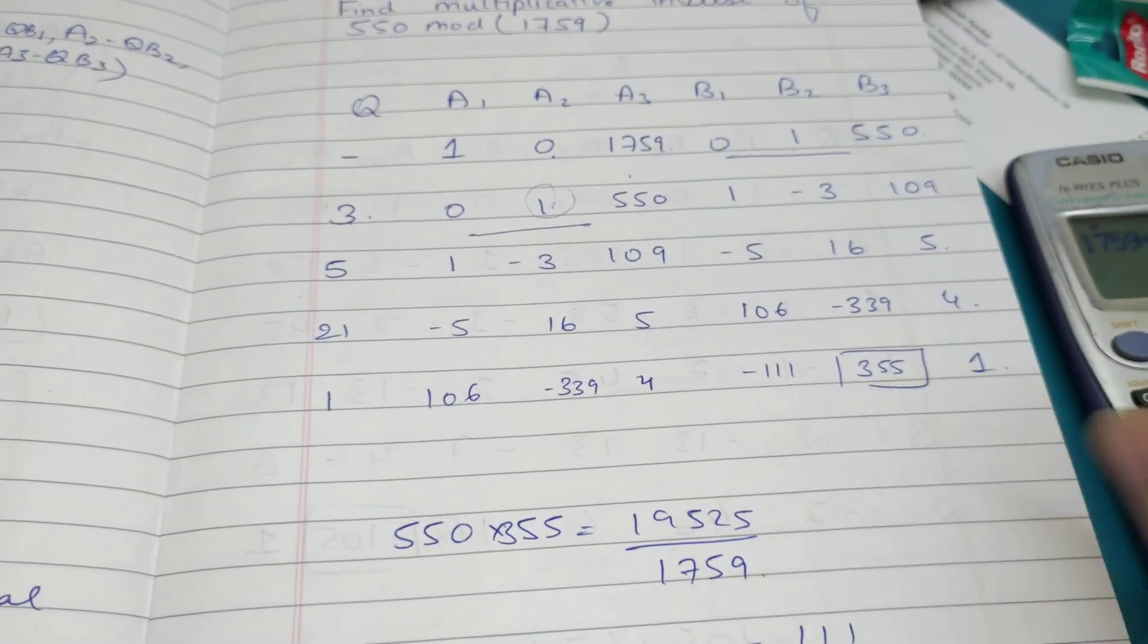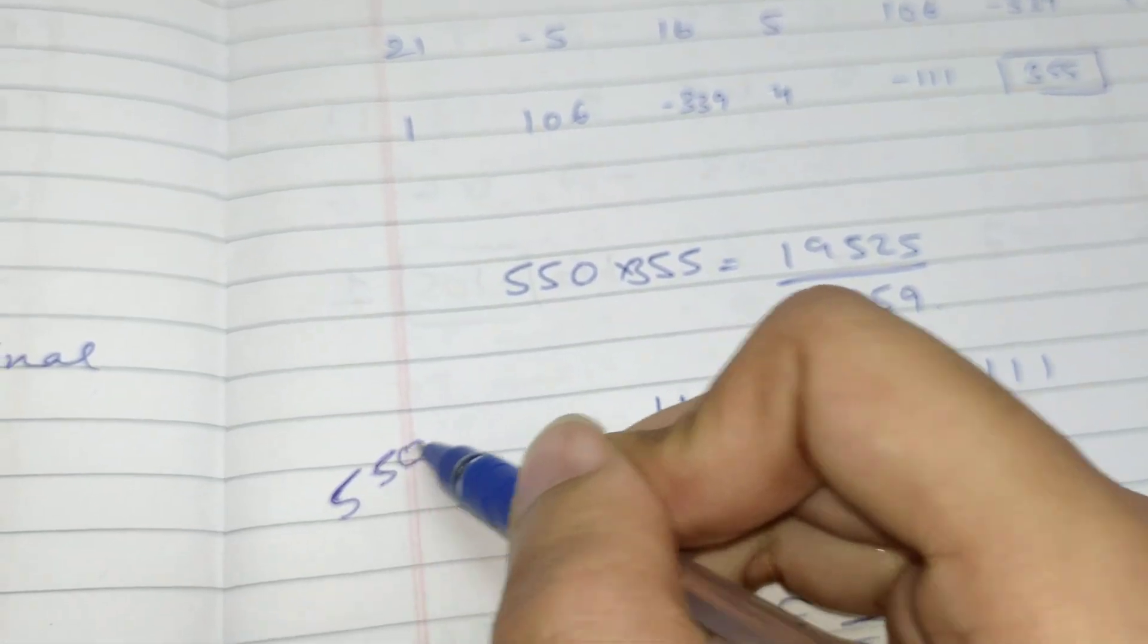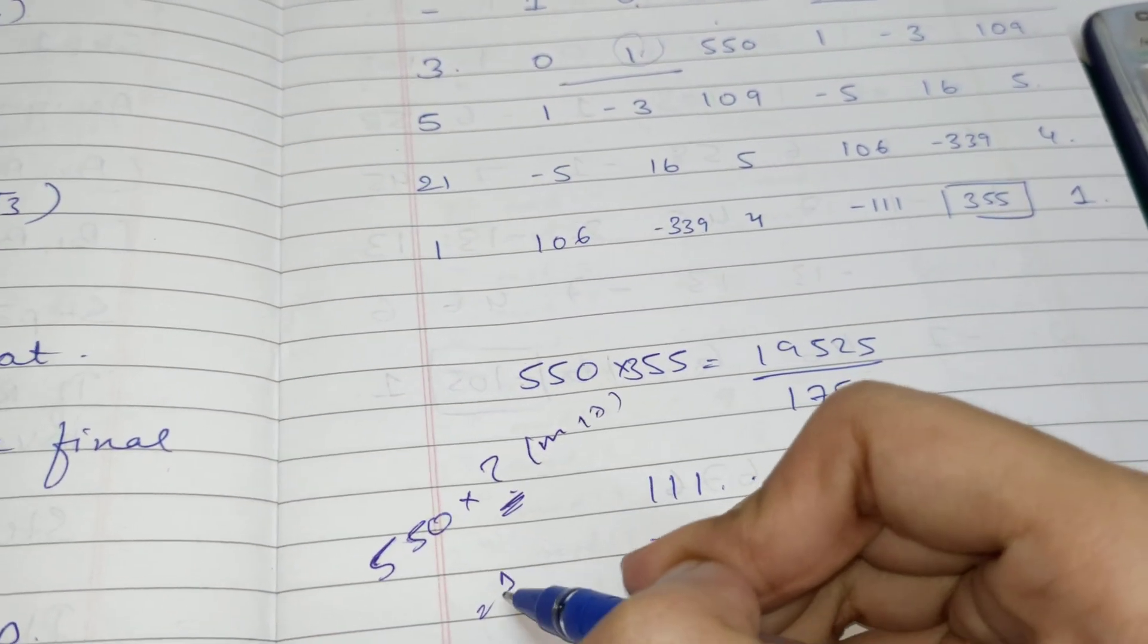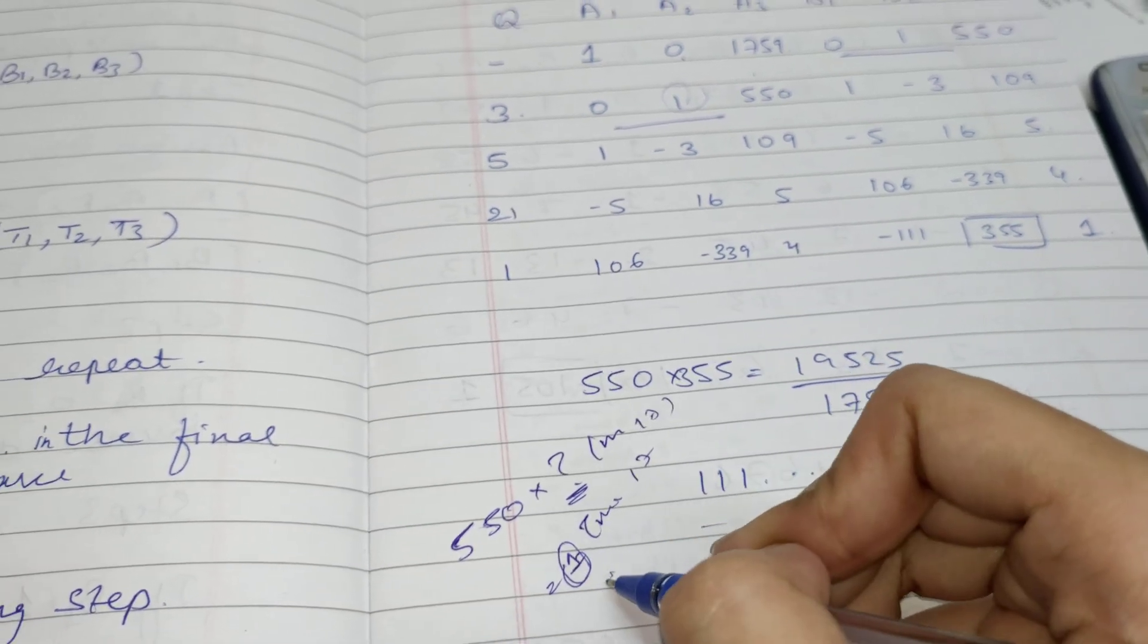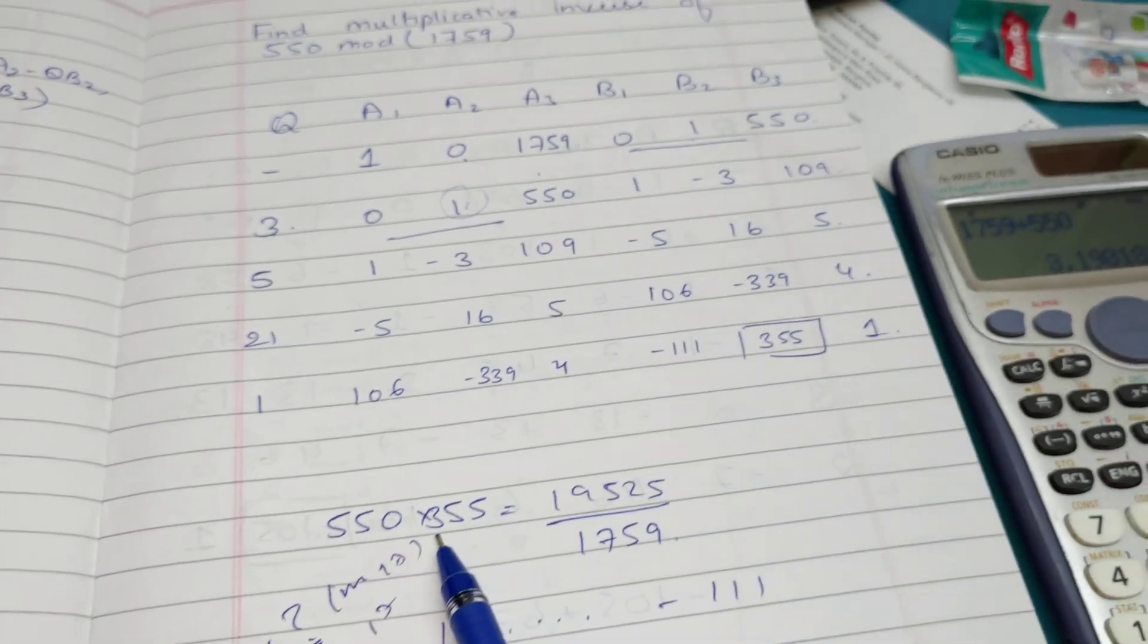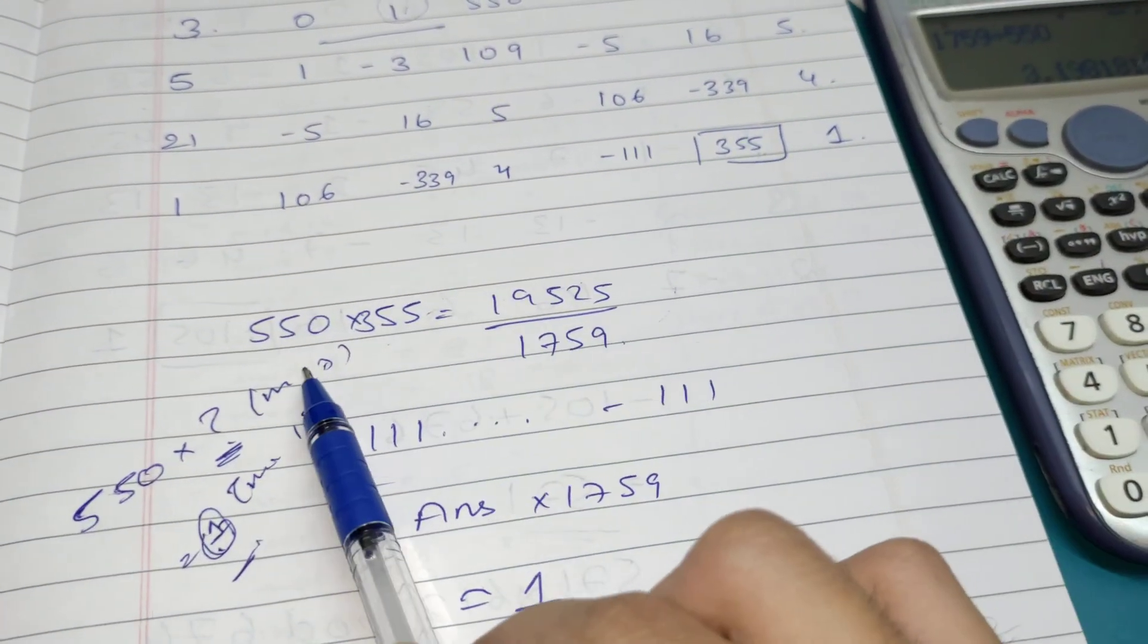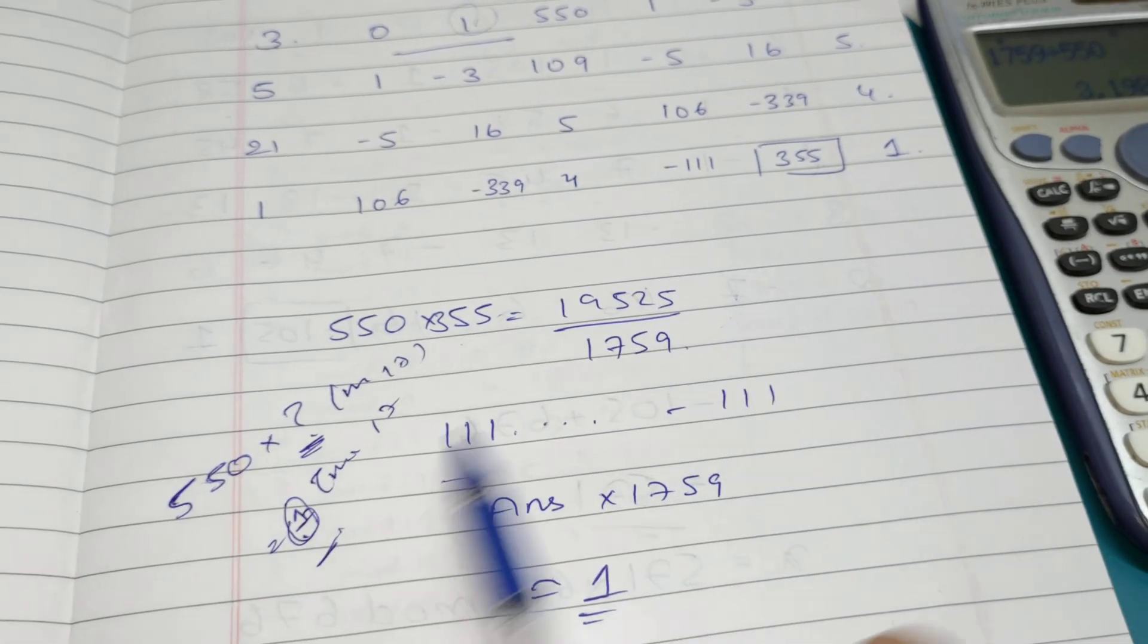What we are doing for multiplicative inverse is: 550 into what value mod 1759 should equal 1. So what you have to do is 550 into 355 - this final answer should be 1 if your answer is correct. 550 into 355 equals 195250. Divide by 1759, you get some value, into 1759 you get final answer 1.